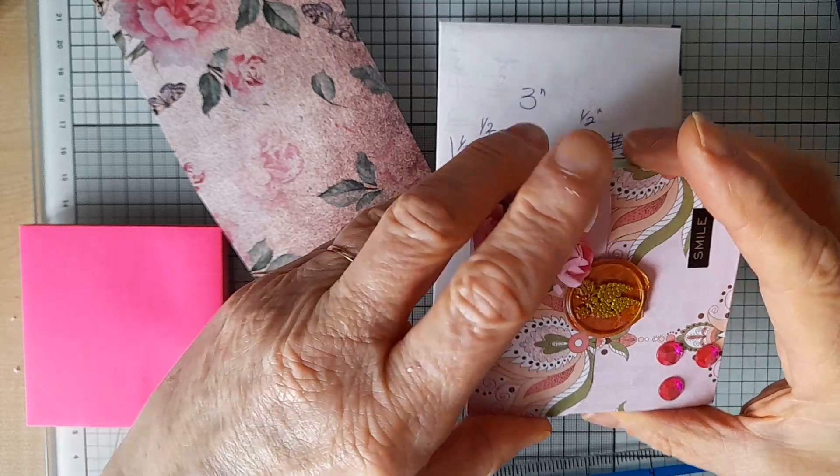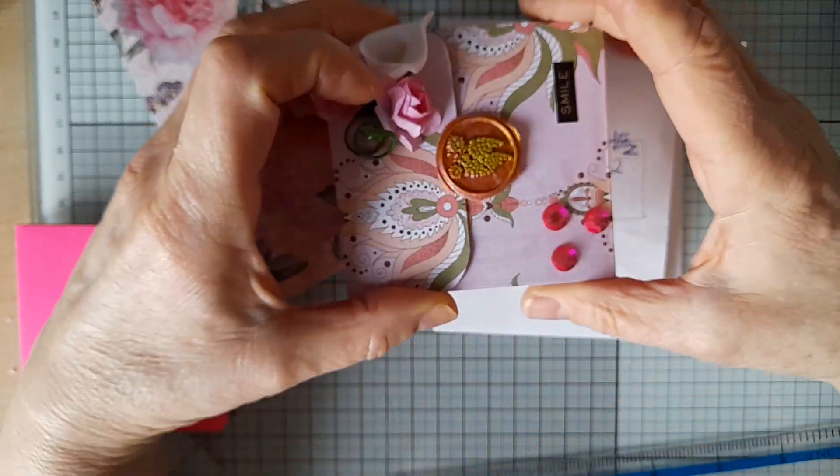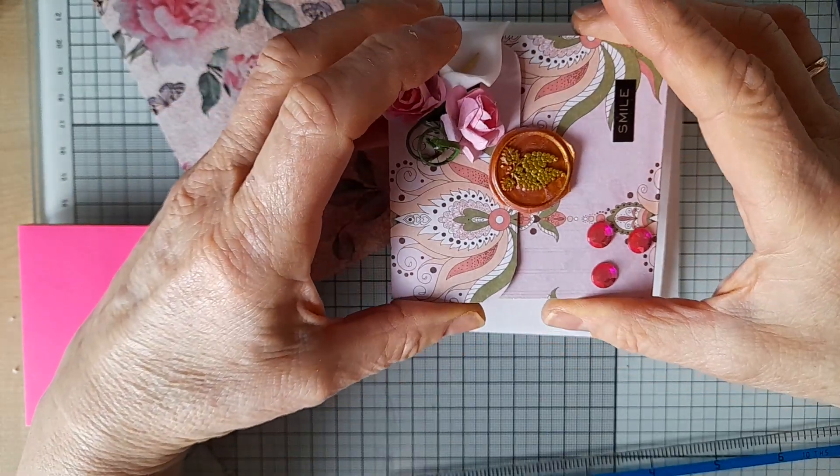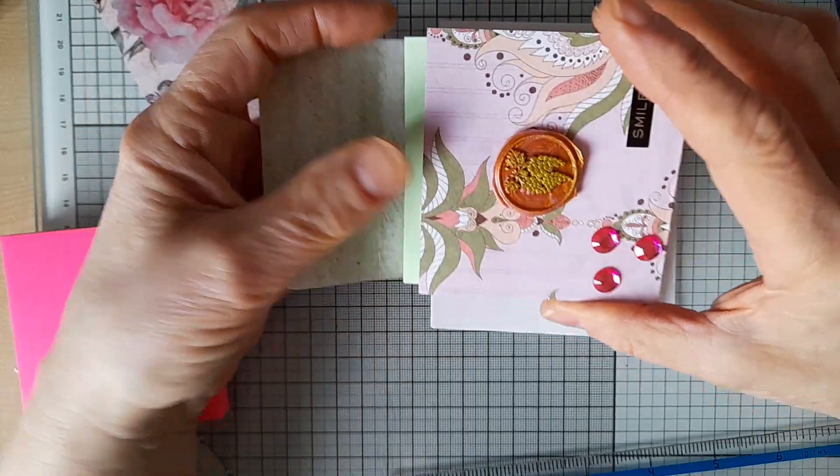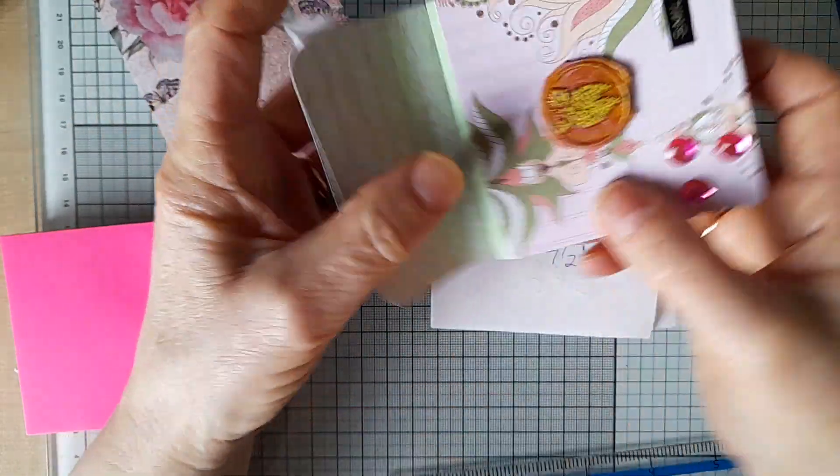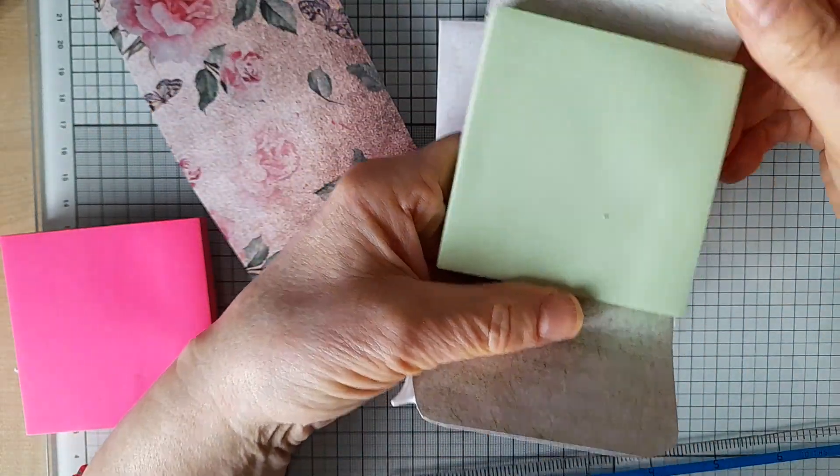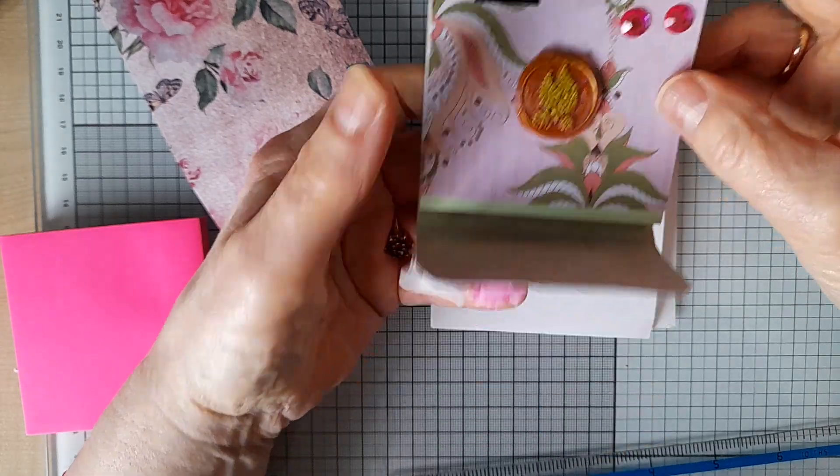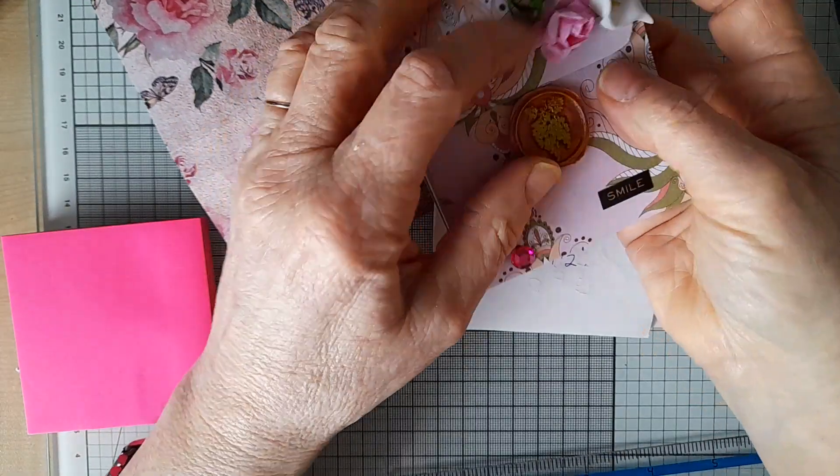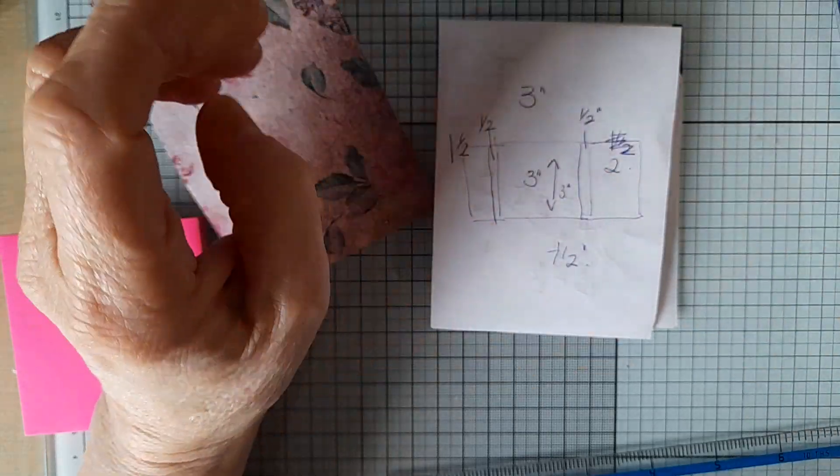Now you don't have to do it that way, you could just leave it like this and have this piece three inches so it just flaps up, but I wanted to make mine so that they closed.